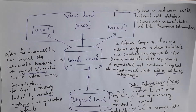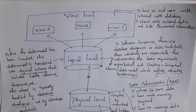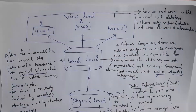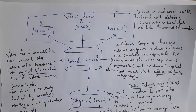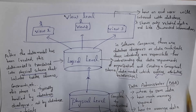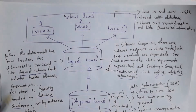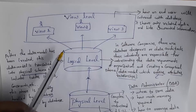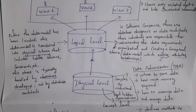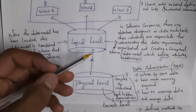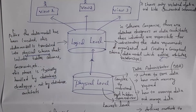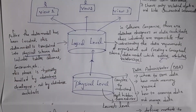The next level is view level. The database will show different views for different users. For example, in a college database, the database will display student information to students and faculty information to faculty. It shows only related information to the user and hides unwanted information. These are the three levels of data abstraction. Users are not shown logical or physical information; people working at the physical level only need physical-level information; and people at the logical level don't need physical or view-level information. This is data abstraction.